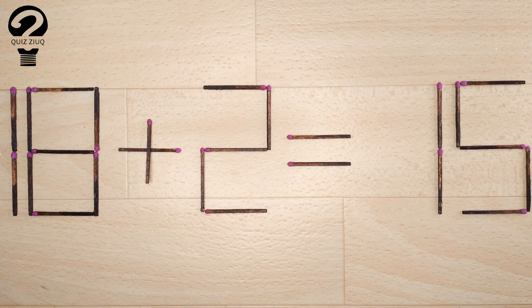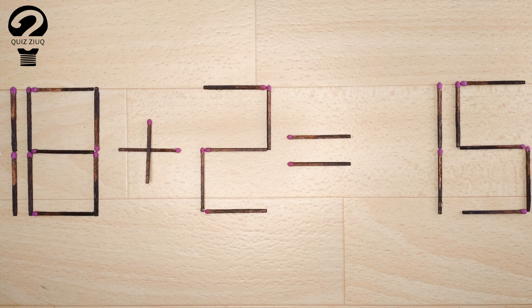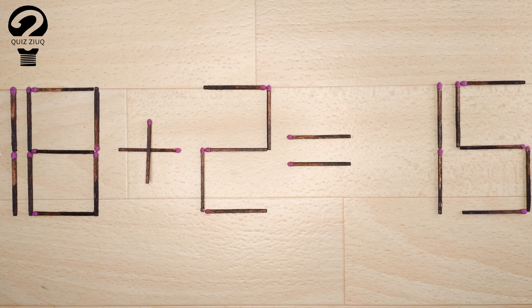Here's the next puzzle. We have the following equation: 18 plus 2 equals 15. Our equation is incorrect. We need to move one matchstick to make our equation correct.